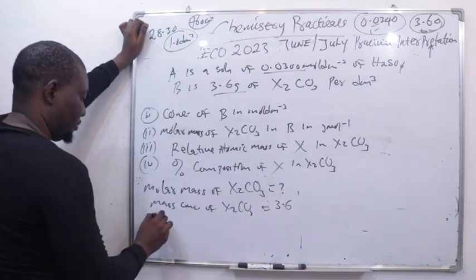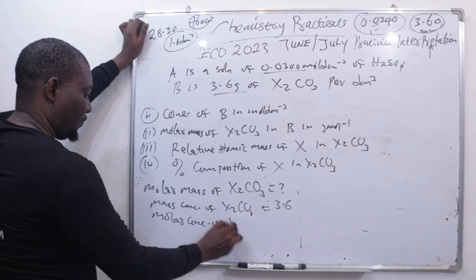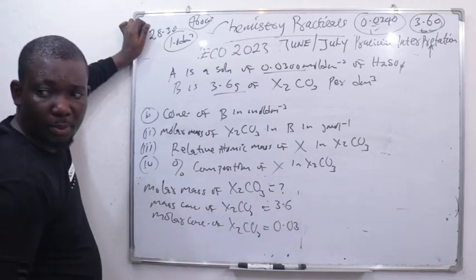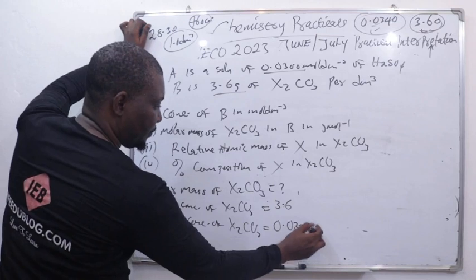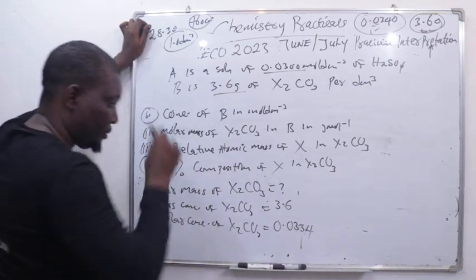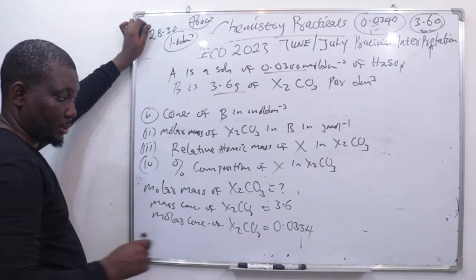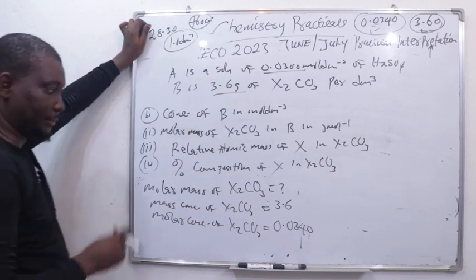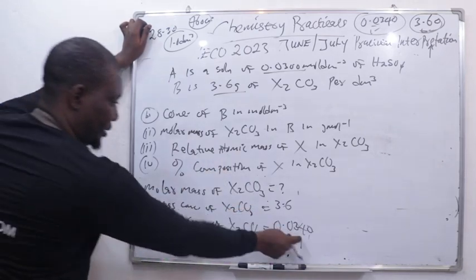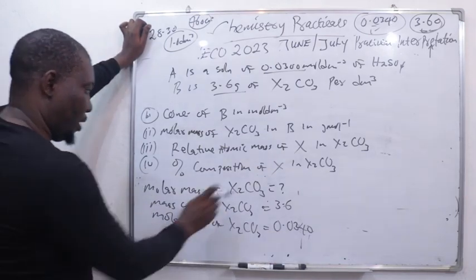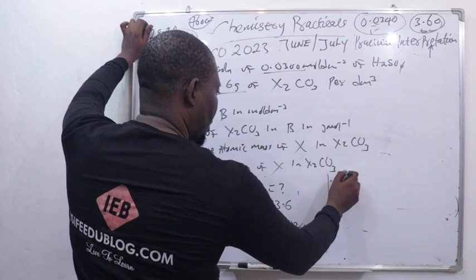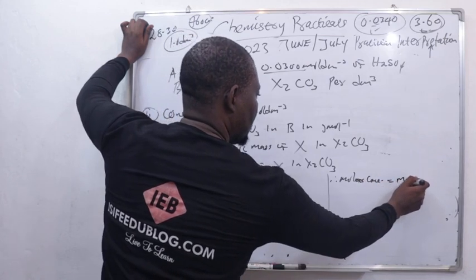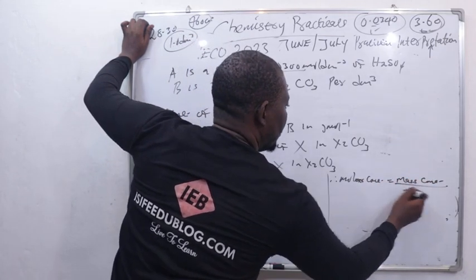So molar concentration is also given. Molar concentration of X₂CO₃ is 0.0340. Now, viewers, what you do is play with these parameters. State the relation: molar concentration is equal to mass concentration over molar mass.